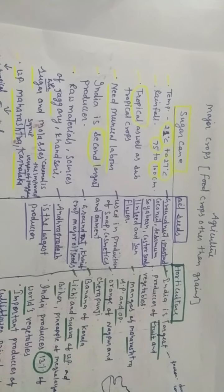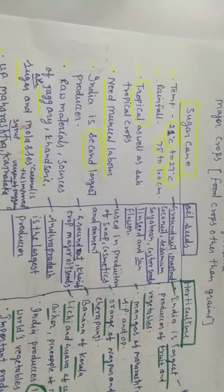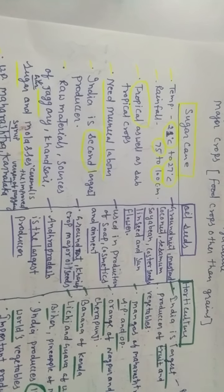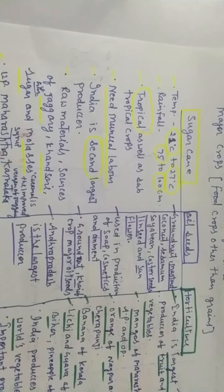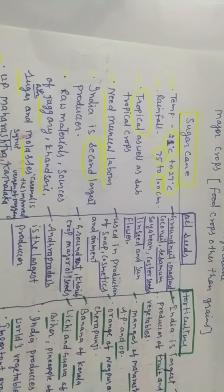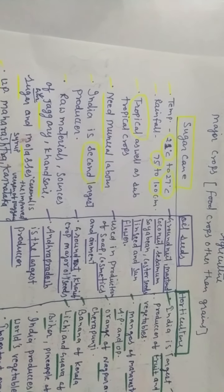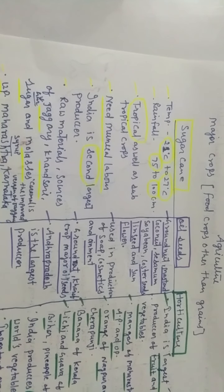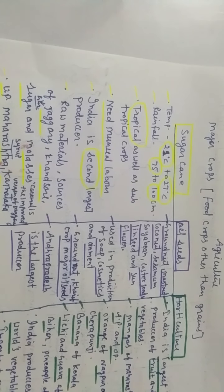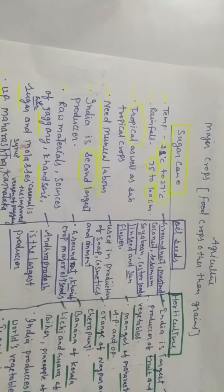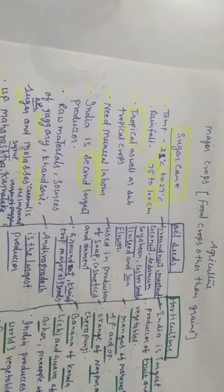First, we will discuss sugarcane, which is a very important crop of India. Sugarcane requires a temperature of 21 to 27 degrees centigrade, rainfall of 75 to 100 centimeters. It is a tropical as well as subtropical crop, meaning it grows in UP as well as Maharashtra. It also needs manual labor that is skilled.